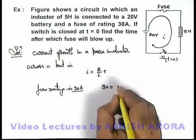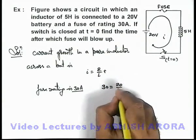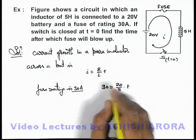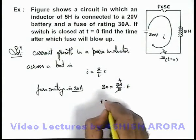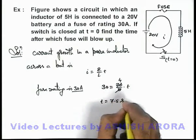So this e by l here we can write it 20 by 5 multiplied by time. So on simplifying here you can see we are getting time is 30 by 4, that is 7.5 seconds.